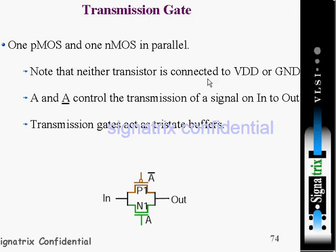Note that neither transistor is connected to VDD or ground. A and A-bar are the control signals that control the transmission of the signal between input and output. When A is one, your NMOS is switched on, and when A-bar is zero, your PMOS transistor is on. So the transmission gate acts like a tri-state buffer.